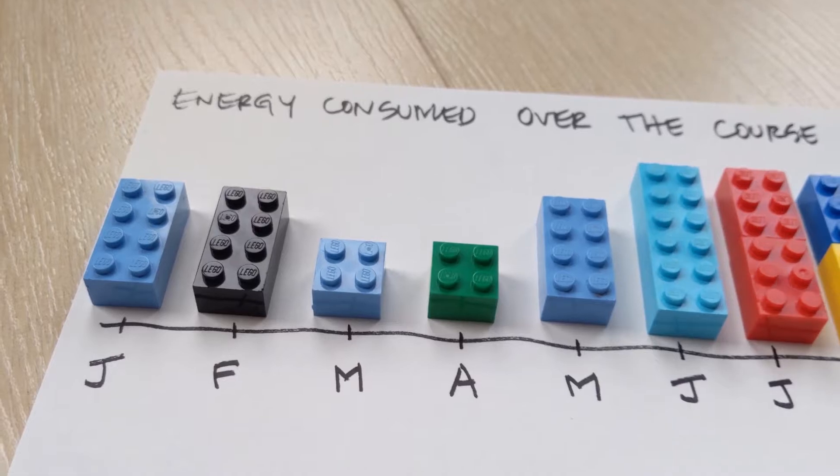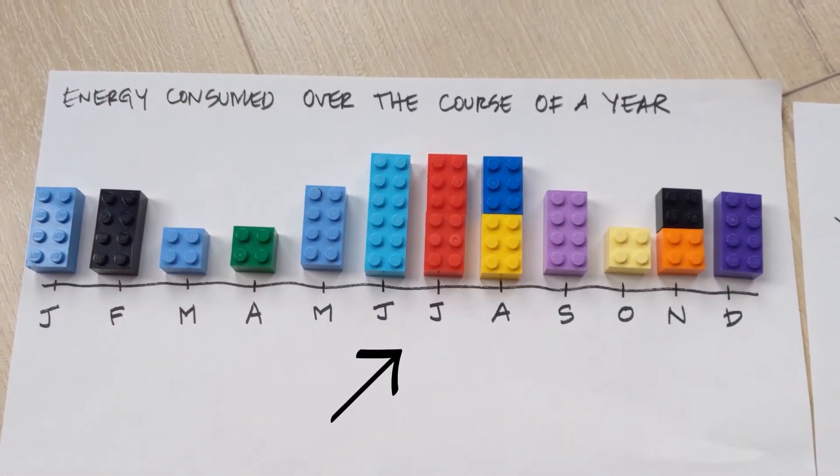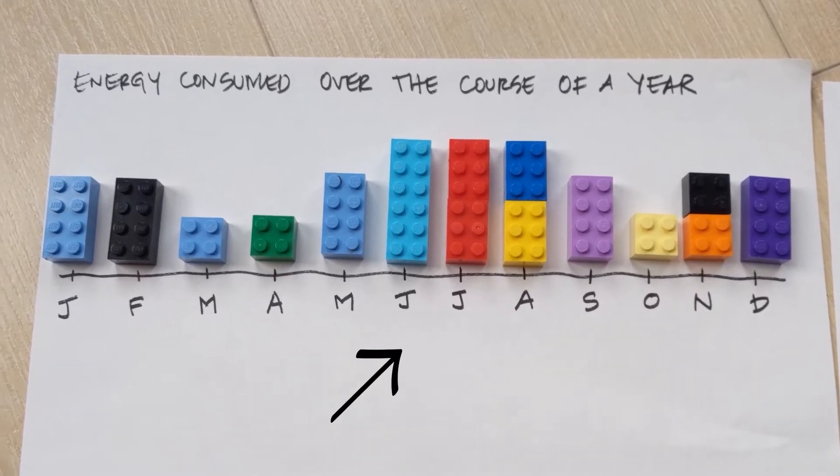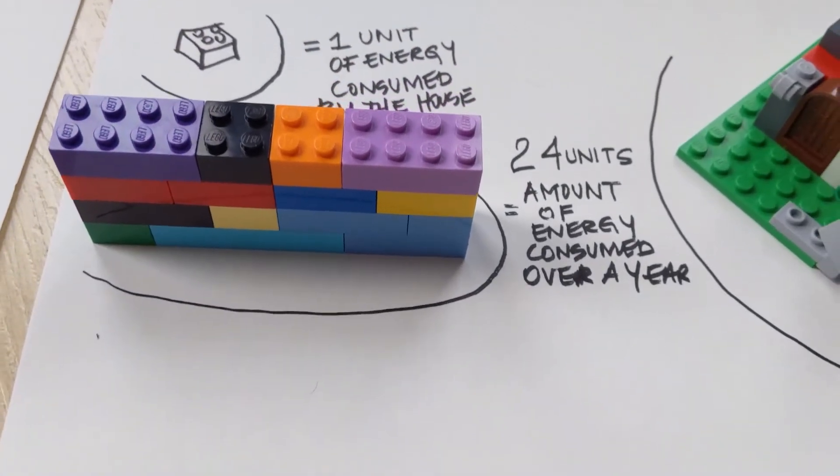When do we use most of the energy? At summer. In the summer. Yeah, that's right. So if you total all the energy that you see, it comes to 24 units of energy.